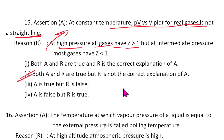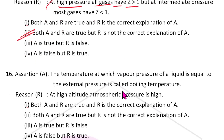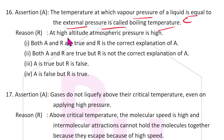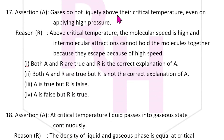Question 16: The temperature at which the vapor pressure of a liquid equals the external pressure is called the boiling temperature. At high altitude, atmospheric pressure is low, so the boiling point is also low.